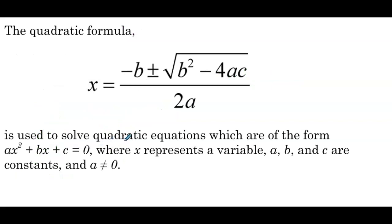So the quadratic formula is x equals negative b plus or minus the square root of b squared minus 4ac, all over 2a. And it's used to solve quadratic equations, which are of the form ax squared plus bx plus c equals 0, where x represents a variable, a, b, and c are constants, and a is not equal to 0.